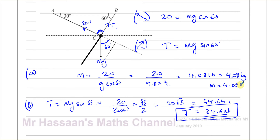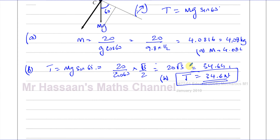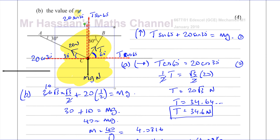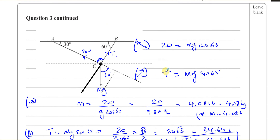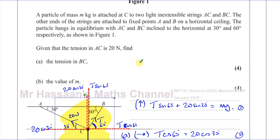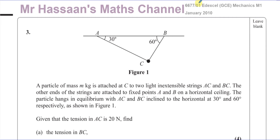In the alternative method, we find the mass first and then the tension, whereas the standard method finds the tension first. Both methods are perfectly fine. I hope that helped clarify how to resolve forces. Other questions from this paper and from the statics topic of M1 will be in the playlists shown on screen. Thank you for watching and see you soon.